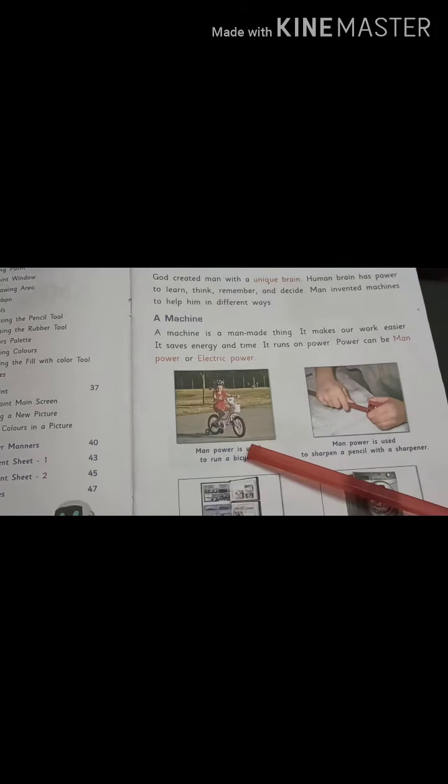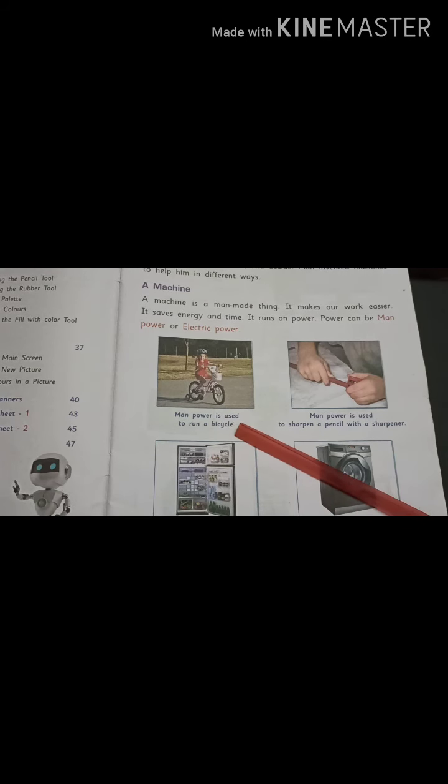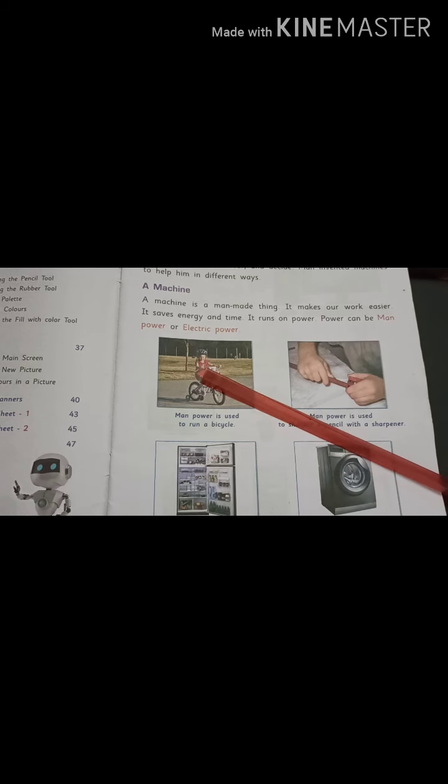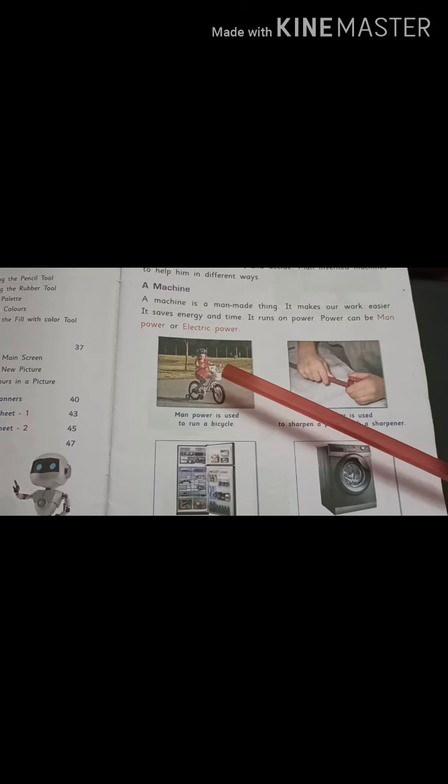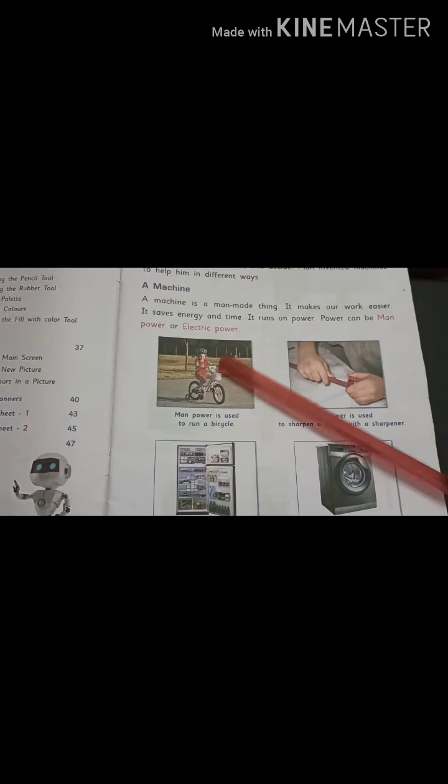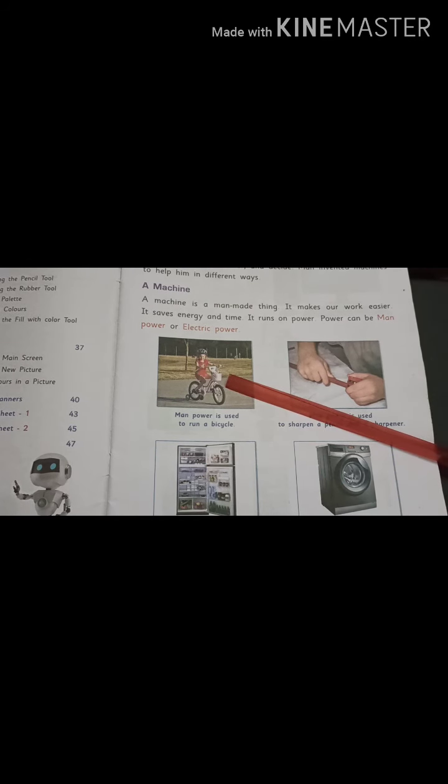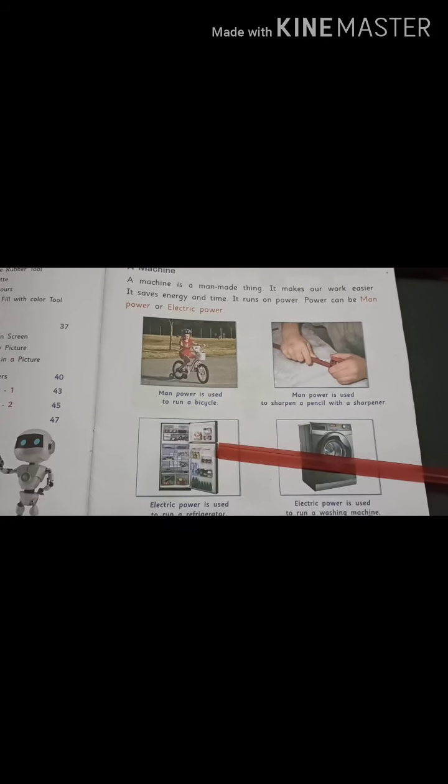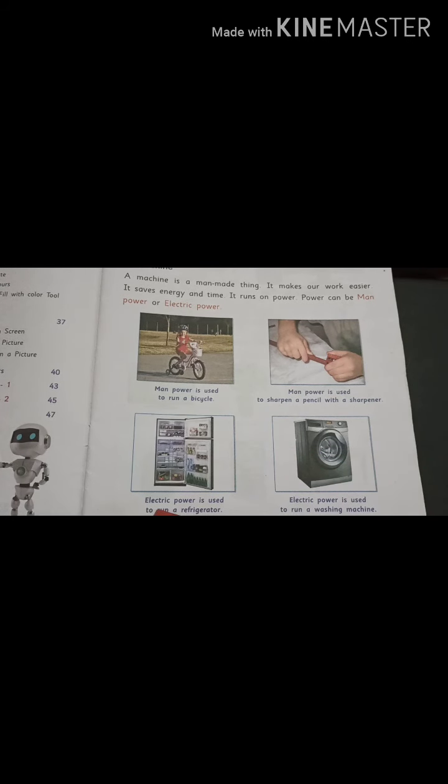See here, manpower is used to run a bicycle. Here, you can see a girl is riding a bicycle. A bicycle runs on the power of a man. That is, whose power is used here? Manpower. Now, you can see here, is a refrigerator. Electric power is used to run a refrigerator.